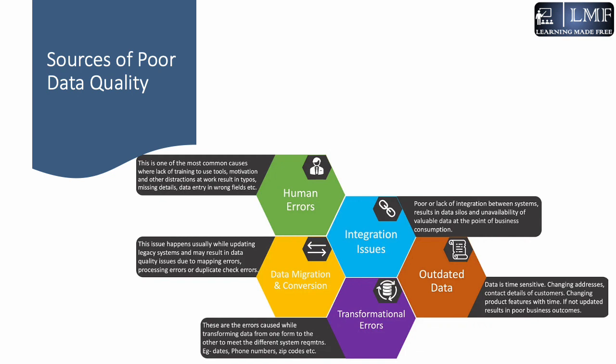The second source is data migration and conversion. When you update your legacy systems and try to migrate data into new systems, it can result in data quality issues due to mapping errors — for example, a name key mapped with a phone key. It may also result in duplicates when merging data between two systems without the right match-and-merge algorithm.